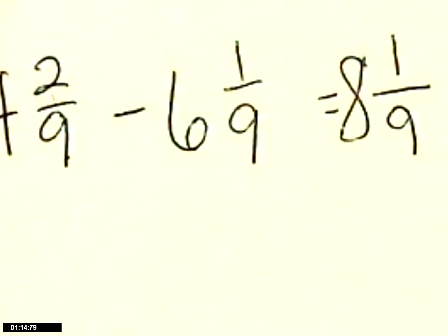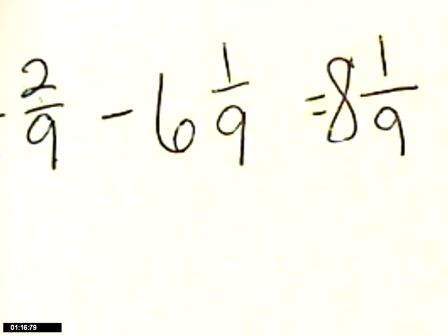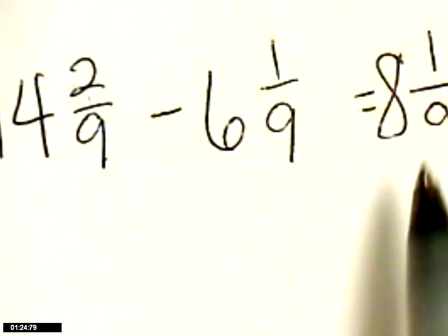Oops, you can't see that. Always keep your denominator for adding and subtracting. Multiply and divide is different, but we'll get there. Then 14 minus 6 is going to give you 8.